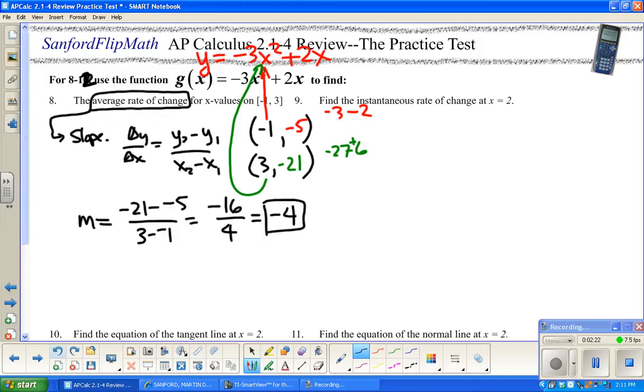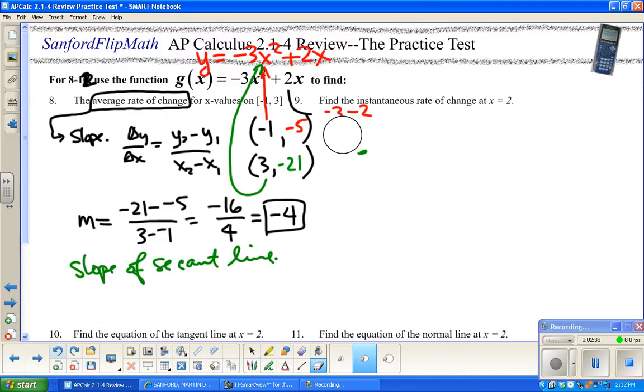So negative 21 minus negative 5, 3 minus negative 1. So this is really negative 21 plus 5 over 4, so negative 4. Quick little note to self: this is the average rate of change. This is also called the slope of a secant line.